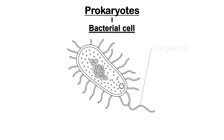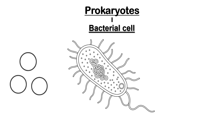Finally, some bacteria have flagella. These are long, thread-like structures that stick out from the cell. Flagella can rotate, allowing the bacteria to move through liquids. In short, they act like tiny motors, helping the bacteria swim around. The shape of bacteria may be spherical, rod-like, or spiral.